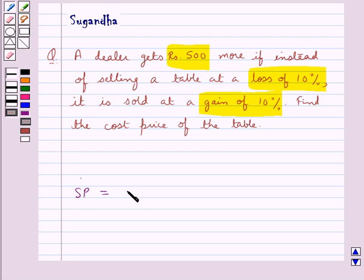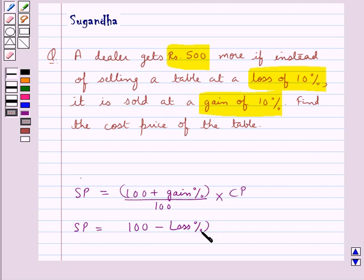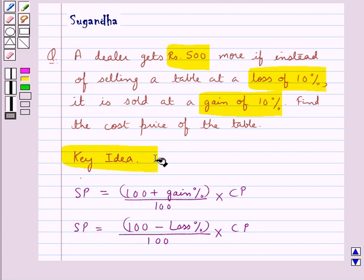When we are given gain percent, selling price equals (100 plus gain percent) upon 100, this whole into the cost price CP. And the selling price when we are given loss percent is equal to (100 minus loss percent) upon 100, this whole into the cost price CP. This is the key idea to be used for this question.